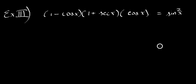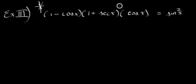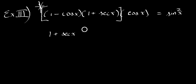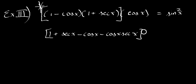What we have to do is work with one side in order to make it equal sine x squared. We'll pick the left side because we can do a lot of things there. I'm going to leave cosine x alone for now and focus on 1 minus cosine x times 1 plus secant x — we can FOIL that out and see what we get. So: 1 times 1 is 1, 1 times secant x is secant x, negative cosine x times 1 is negative cosine x, and we're still multiplying by cosine x.